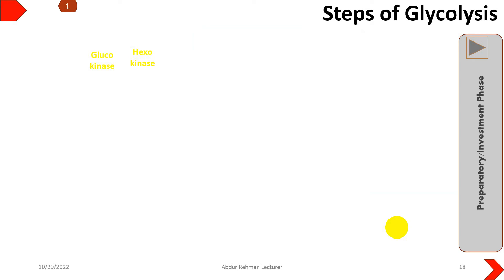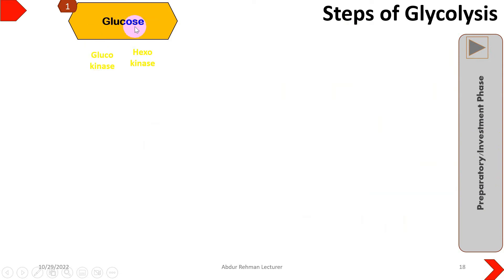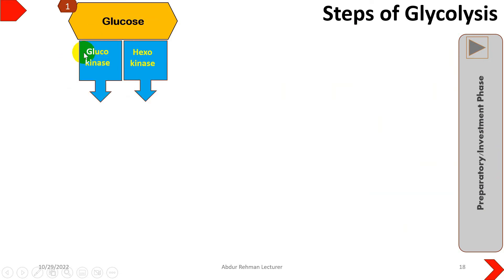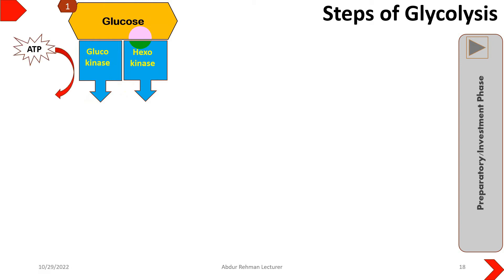Now let's look at the steps of glycolysis quickly. In the preparatory phase or investment phase, we have to invest our energy. First, the glucose molecule enters inside the cell with the help of glucose transporter proteins. There are two enzymes present inside the cell — glucokinase or hexokinase — and these will convert glucose into glucose 6-phosphate by utilizing one ATP.